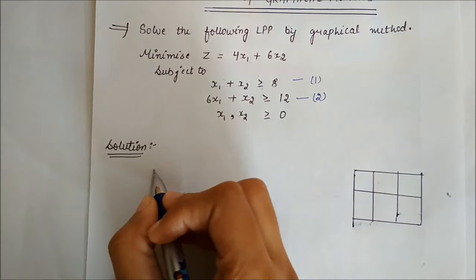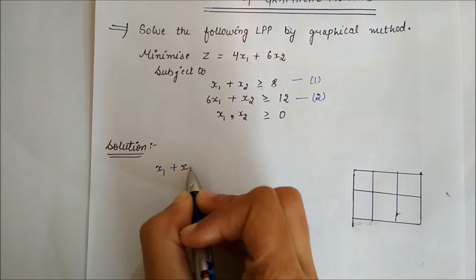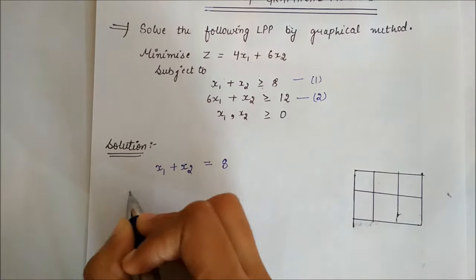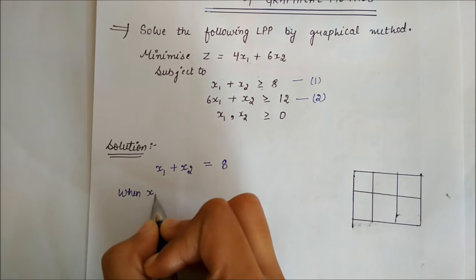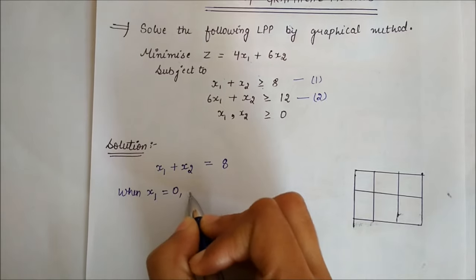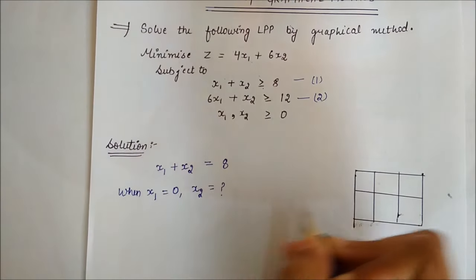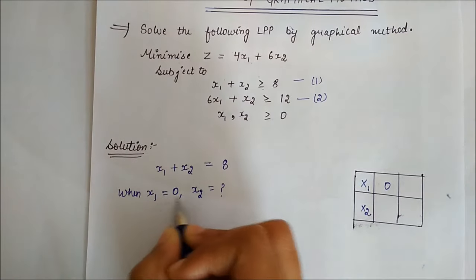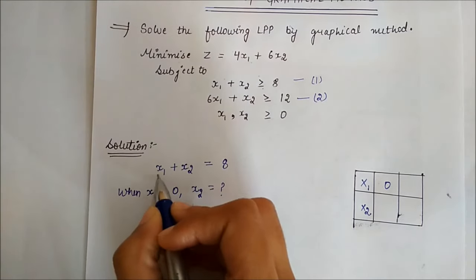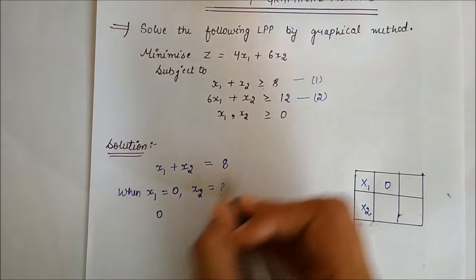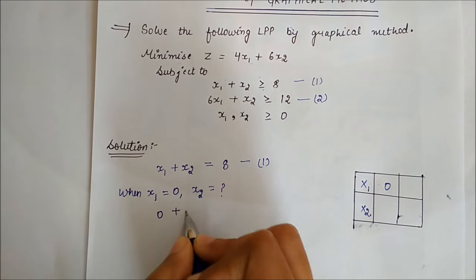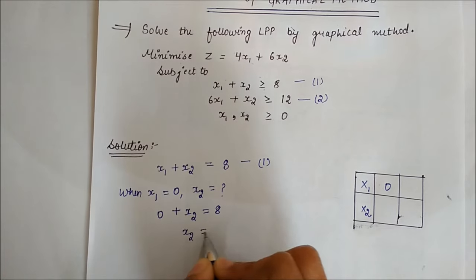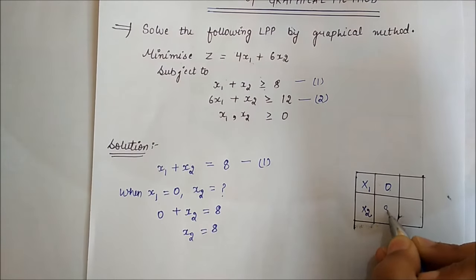For the solution, we will take the first equation. The first equation is x1 plus x2 equal to 8. When x1 is equal to 0, we put x1 equals 0 into the first equation and find x2. So x2 is equal to 8. When x1 is 0, x2 is 8.